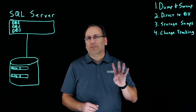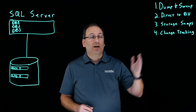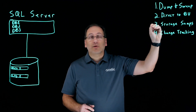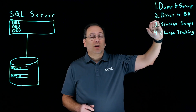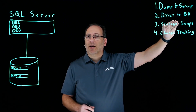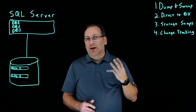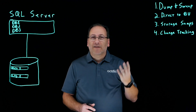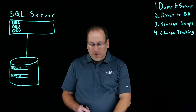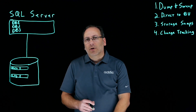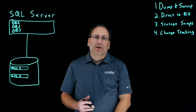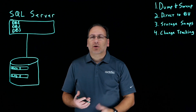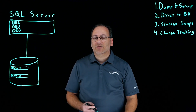There are really four different approaches that people use. Number one, there's the dump-and-sweep approach, followed very closely by number two, direct-to-backup software. Then you have storage array snapshots, and finally you have change tracking. What we're going to do is run through all four of them and talk about the pros and the cons of each and exactly what they look like from a mechanics standpoint.